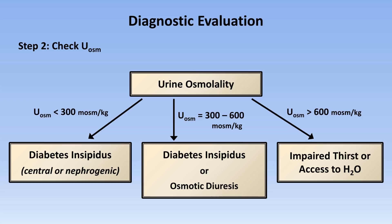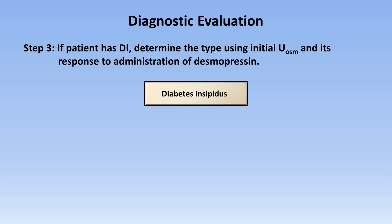Since the history almost always identifies causes of impaired thirst or lack of access to water, and the combination of history and the urine dipstick for glucose identifies nearly all cases of an osmotic diuresis, the only patients who require further workup at this point are those with DI.